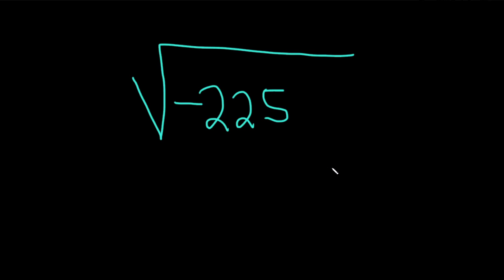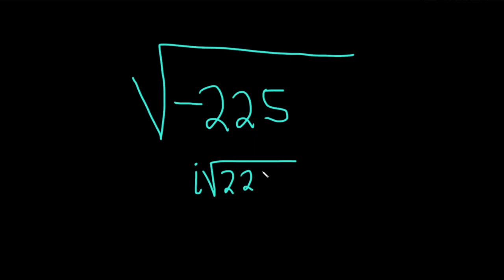In this problem, we have to simplify the square root of negative 225. The first step in a problem like this is to deal with the negative that is inside the square root. This will become an i, and then we still have the square root of 225.